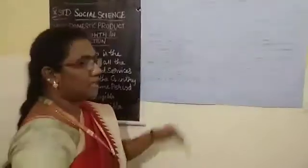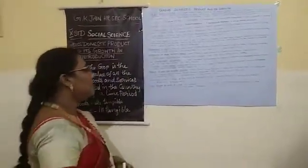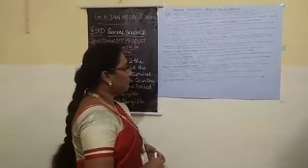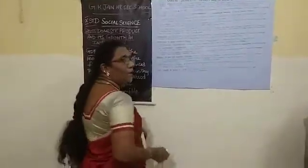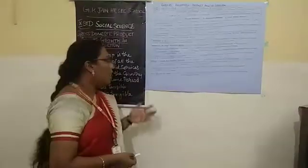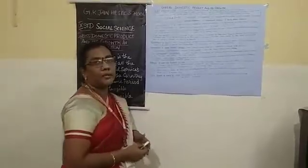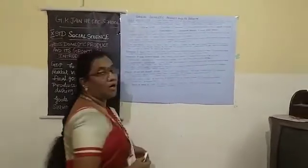Now we will see the growth of GDP and economic policies. Many economic policies have been formed by the Government of India since independence for increasing the rate of economic growth and development. The important economic policies are: agricultural policy, industrial policy, and new economic policy. Other policies include trade policy, employment policy, currency and banking policy, fiscal and monetary policy, wage policy, and population policy. GDP growth of India in 2018 is projected at 7.3%, and India is the 5th fastest growing nation in the world.